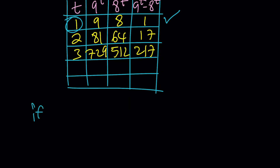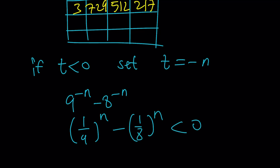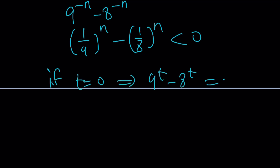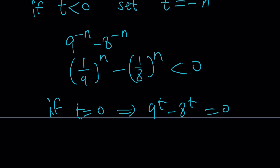What if t is less than 0? Setting t equals negative n, we get 1 over 9^n minus 1 over 8^n, which is negative, because 1/9^n is less than 1/8^n for positive n. And if t equals 0, the difference is 0, not 1. So our solution must be positive for t, which happens at t equals 1, corresponding to x equals 2. That's the only solution.